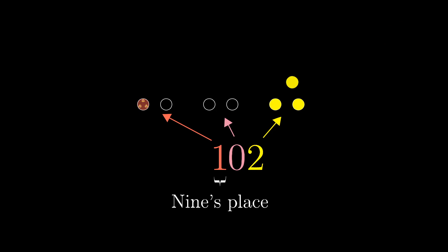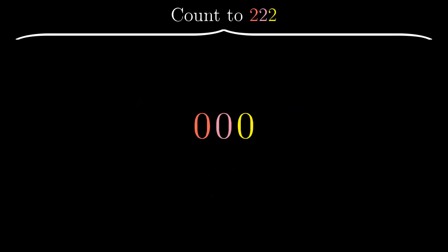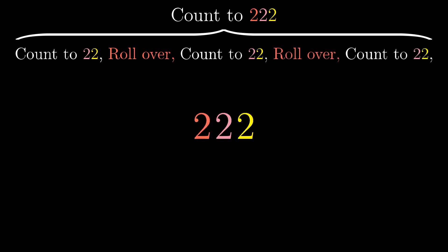Just like base two and base ten, there's a certain self-similarity to this pattern. At all scales, it looks like counting up to some amount, rolling over, counting to that same amount, rolling over again, then counting to that same amount a third time.